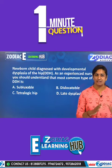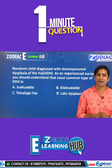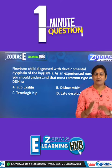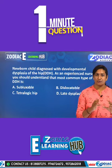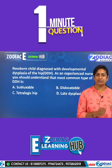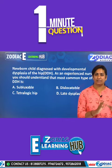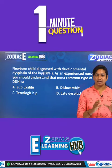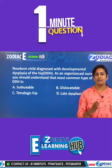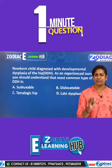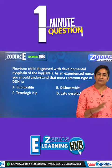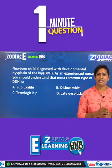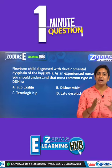The most common type of DDH is subluxable. With subluxable DDH, the hip can be displaced using a single manipulation. Other types include tautologic hip and late dysplasia.